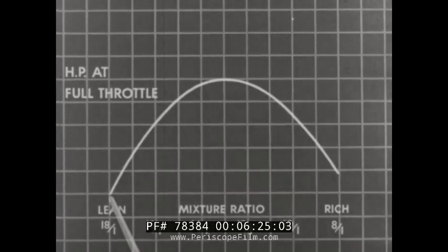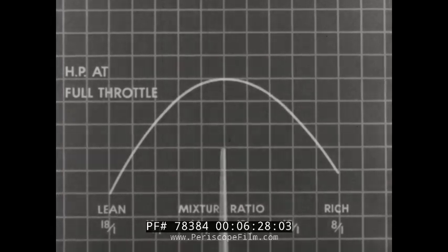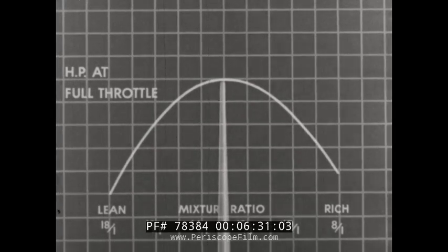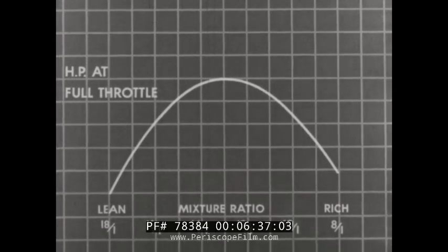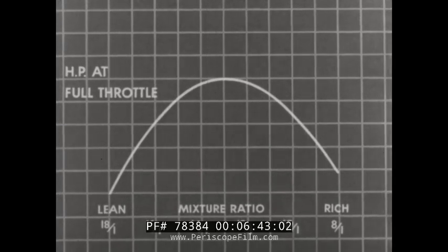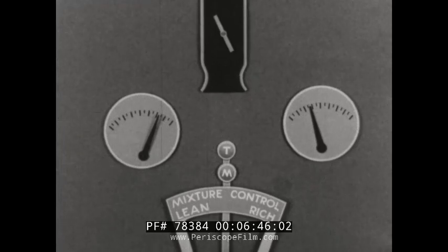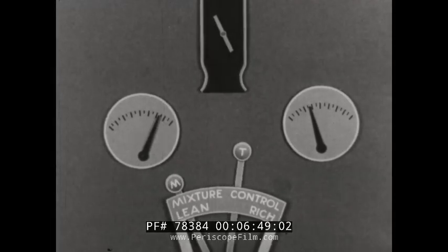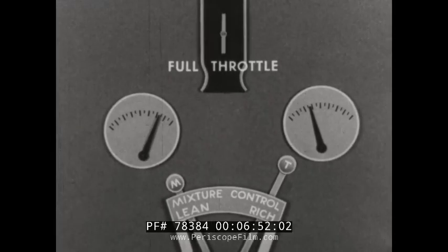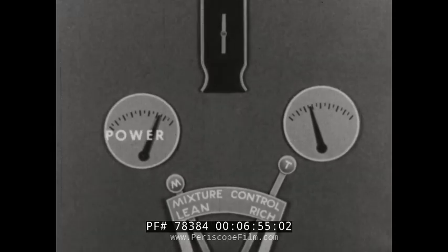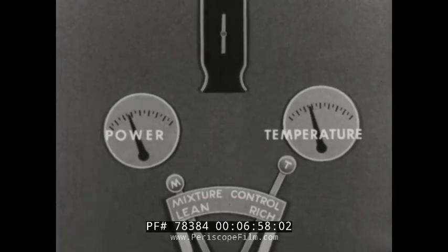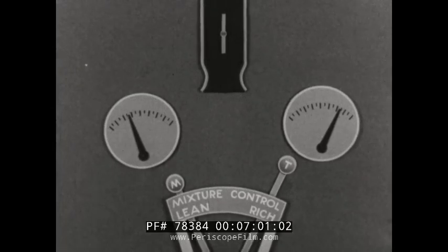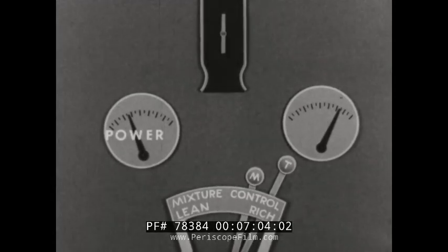This graph shows how horsepower varies with the mixture, the left of the curve representing the leanest mixture which will burn. Maximum power is obtained with a mixture of 12 to 14 parts of air to one of fuel. Further increase in richness results in dropping off of power. With too lean a mixture at full throttle, cylinder temperatures run exceedingly high and cooling systems may be inadequate. With a mixture that is rich enough to consume all the oxygen, more power is obtained and cylinder temperatures run cooler.